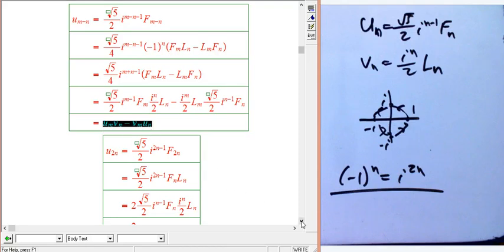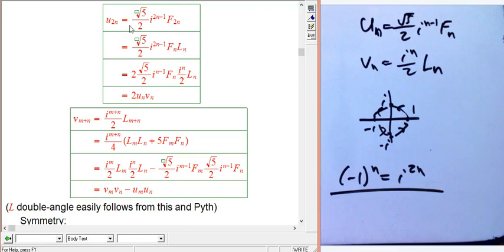Similarly, u_2n, this is really just a corollary of the sum formula, but it's nice how it works out. You write it out in terms of F_2n, and the F_2n is just F_n L_n. As usual, the root 5 over 2 and n minus 1 of these i's goes with F_n. i to the n over 2 goes with L_n. But wait a minute, there wasn't an extra 1 half here. That's okay, because putting in the 1 half needs to be cancelled by a 2, and you get u_2n is 2u_n v_n. That's exactly analogous to sine of 2x is 2 sine x cosine x.